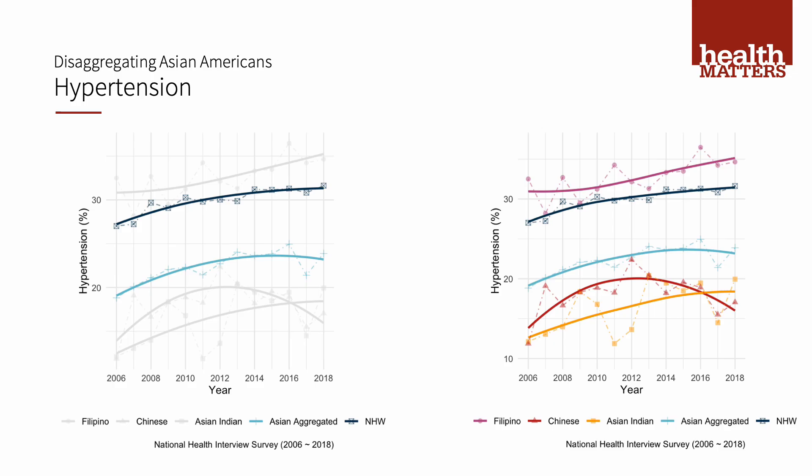Over 2006 to 2018, on the left graph you see that when Asians are aggregated, it looks like they have lower rates of high blood pressure compared to non-Hispanic whites. On the graph on the right, when we disaggregate the Asian subgroups, there are some groups we have to be particularly concerned about for their risk of high blood pressure — in this case, the Filipino group.